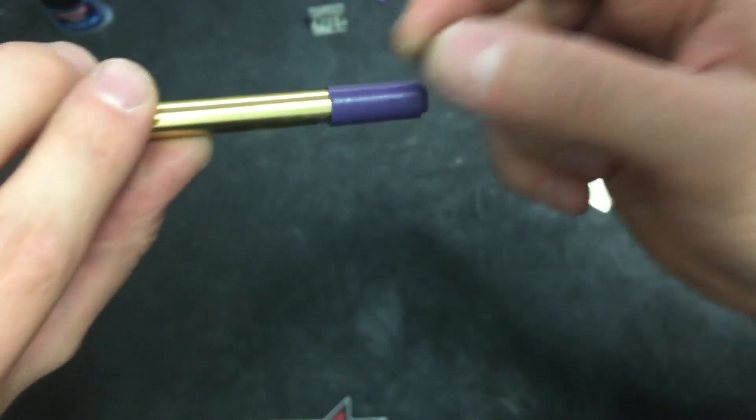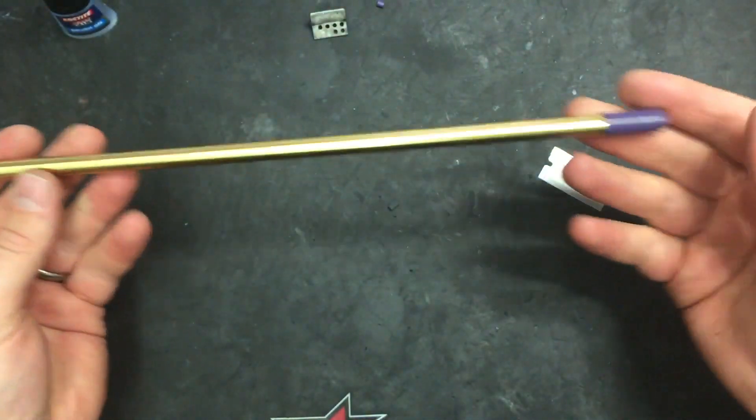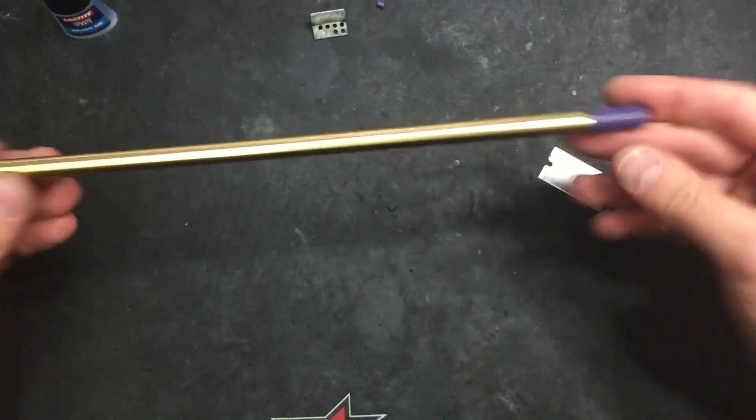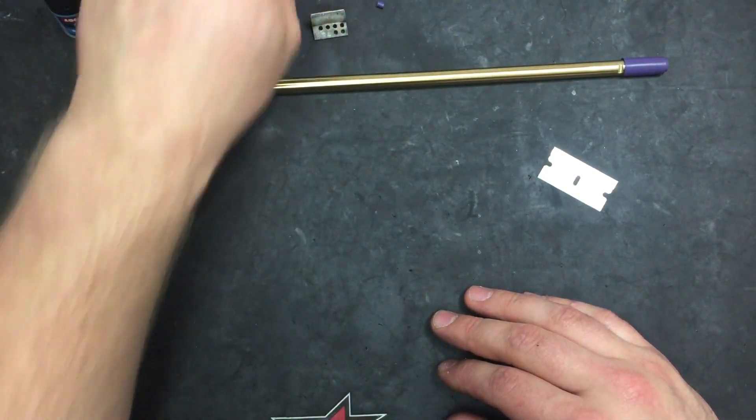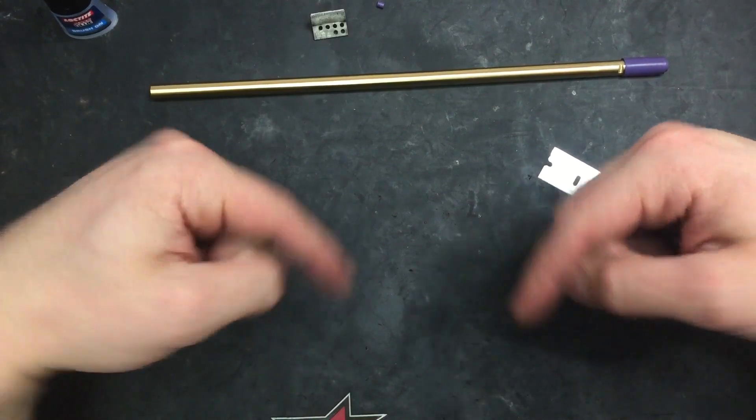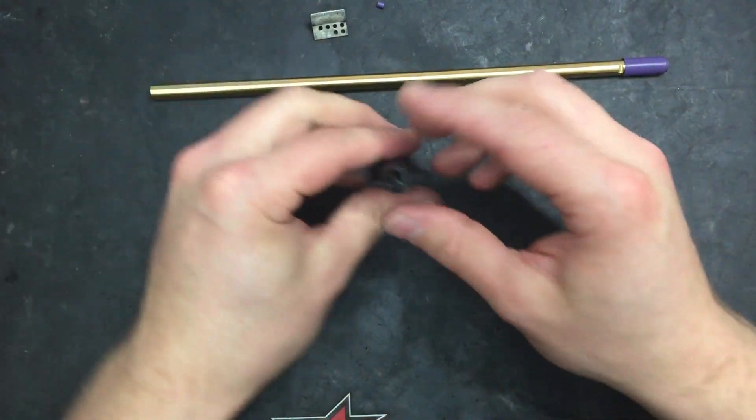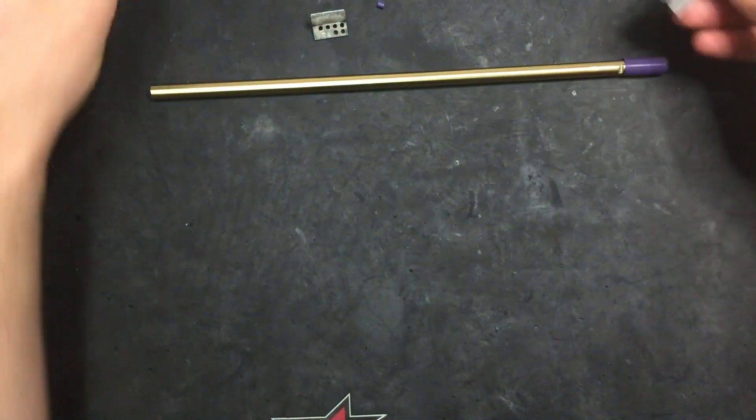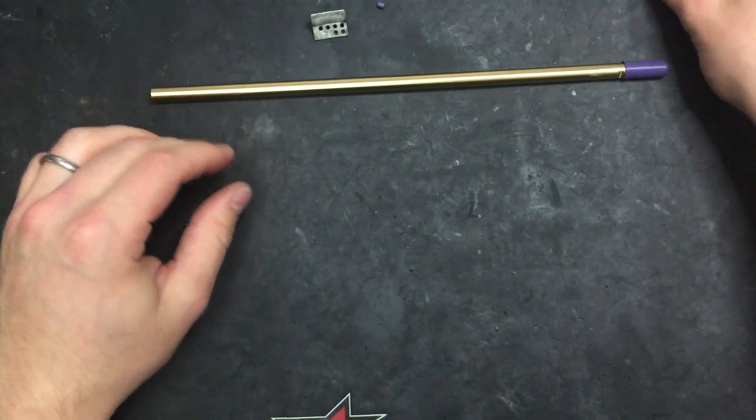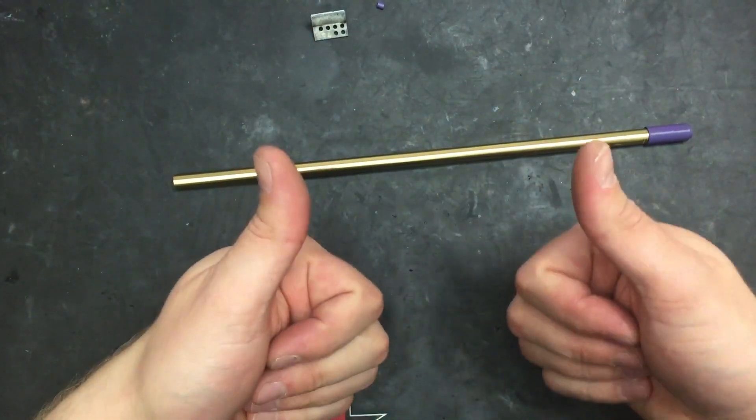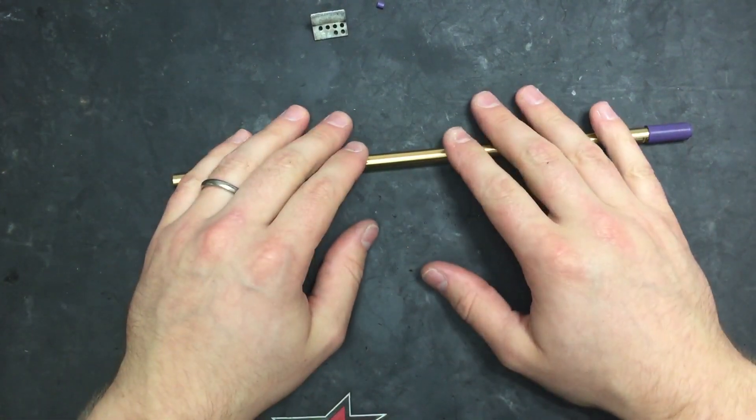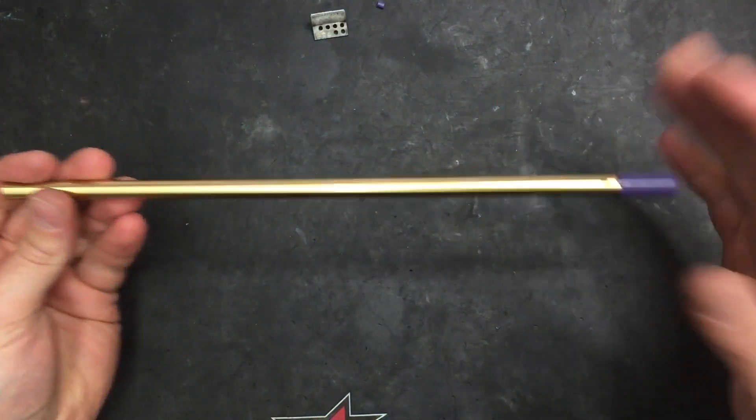And that's it. That is how to install an R-HOP. Well I hope that's handy. If you have any comments or questions just chuck them in the comments below or chat to me on Facebook or via email, Kingdom of Airsoft. I'm sure you'll find it on Google. And yeah, if you like it give us a wee like, give us a wee subscribe, and we'll see you next time.